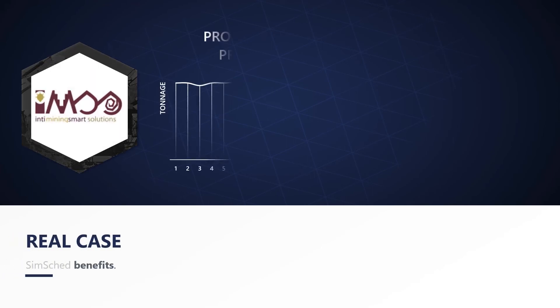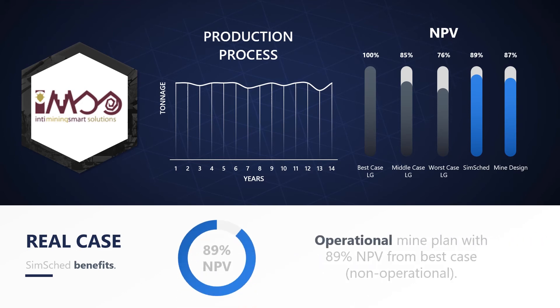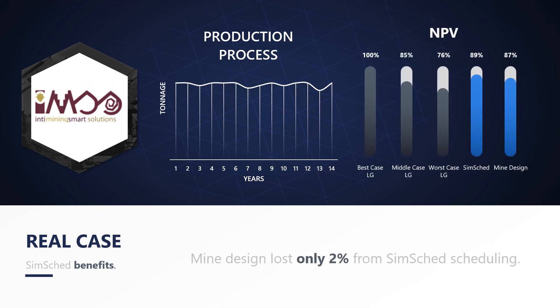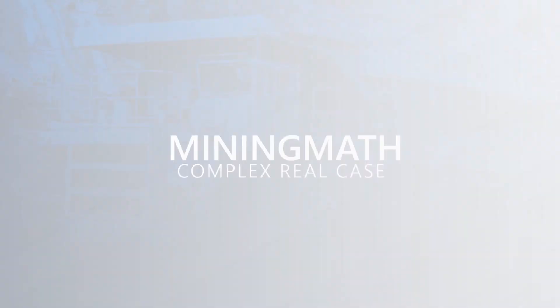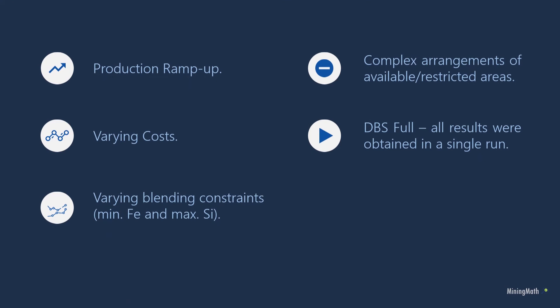Inti Mining Smart Solutions (IMSS) from Peru used SimSched DBS in a multi-mine project. It was possible to achieve 89% of the NPV of the so-called best case in a single run, a considerably small difference against an unachievable mathematical result. Mining math worked in a real complex case that included a production ramp-up, varying costs, and varying blending constraints. Also, there was a complex arrangement of restricted areas that were combined in different periods. All results were obtained in a single run using SimSched DBS Full.